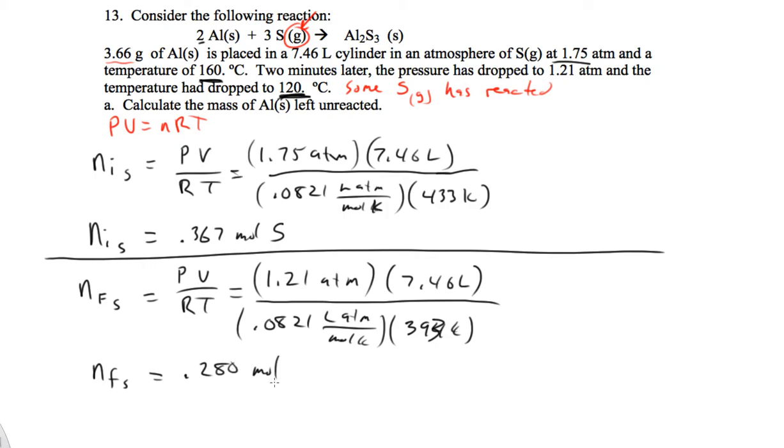So 0.367 is what we started with and then after the two minutes we had 0.280. So the moles of sulfur used is going to be 0.367 minus 0.280, which turns out to be 0.087 moles of sulfur reacted.